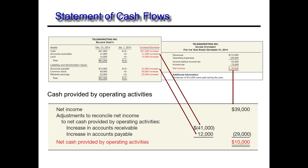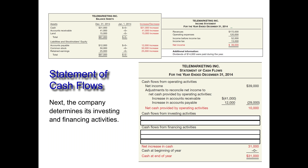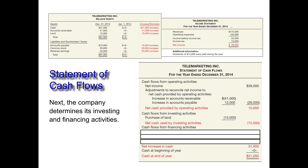Our next step is to move to the investing and financing activity sections. In the investing activity section we analyze all long-term assets. We have one — land — and it went up, meaning we purchased land, which means cash went down. So it will be a negative number, and we only have the one, giving us net cash used by investing activities.